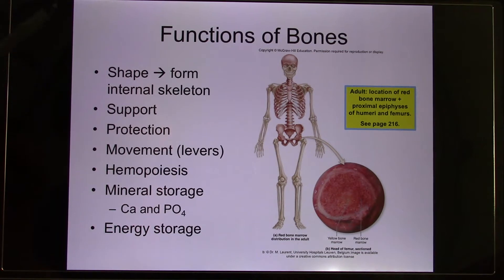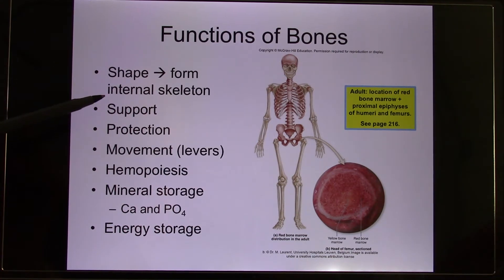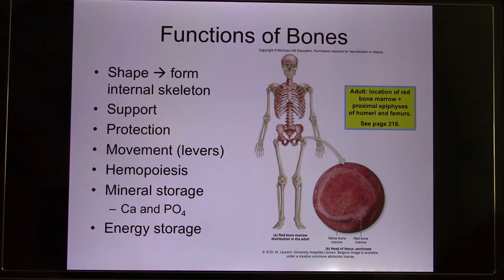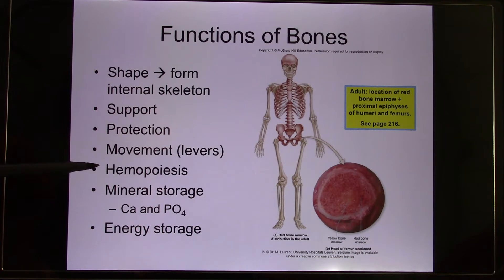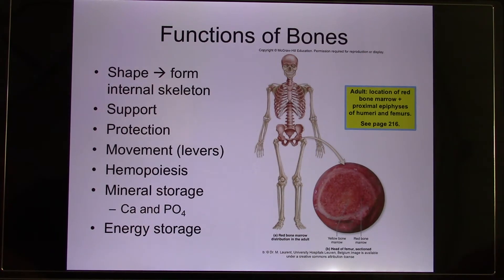The functions of the bones — we can put them into different shapes, so they have different functions. For example, the flat bone is mainly for protection and support. Bones also work together with the muscular system for movement. Hemopoiesis — not homeostasis. Homeostasis is to maintain a stable environment. Hemo means blood, so hemopoiesis is to produce blood. In the bone marrow, the red bone marrow is where the red blood cells are produced.